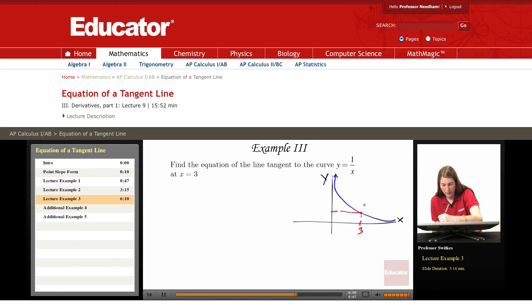So we have the point x equals 3, y equals 1 over 3. That's our point a, f of a. So again we have a point 3 comma 1 third.